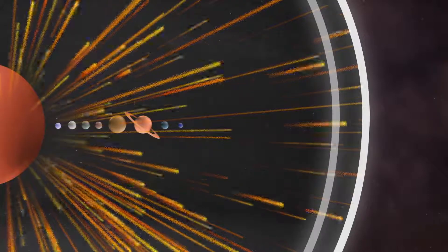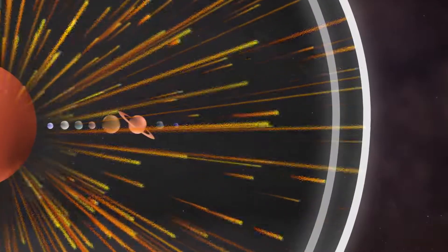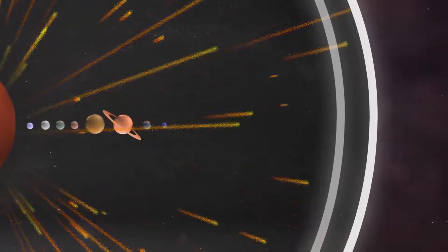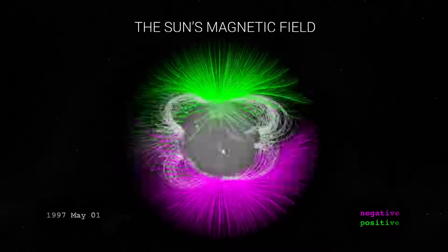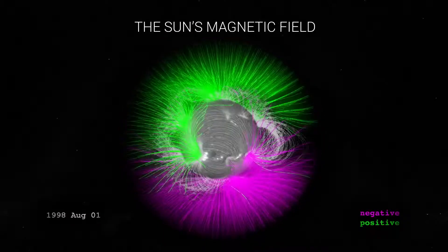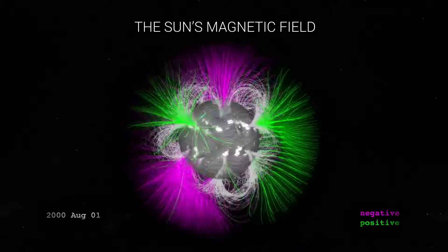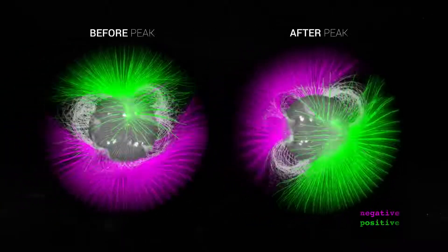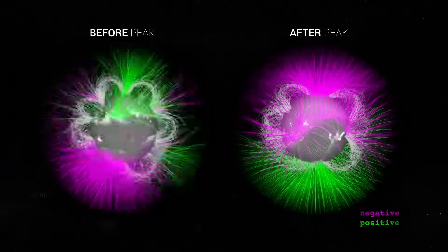Scientists have been monitoring this boundary over the past decade, and they're seeing it change with the sun's activity. Roughly every 11 years, the sun's magnetic field ramps up. This is known as the solar cycle. And at the peak, the sun's magnetic poles flip, north becomes south and vice versa.